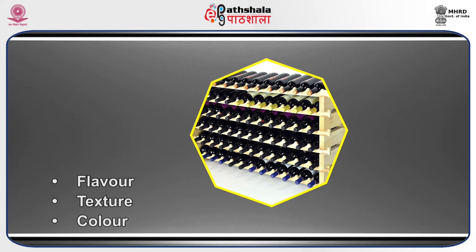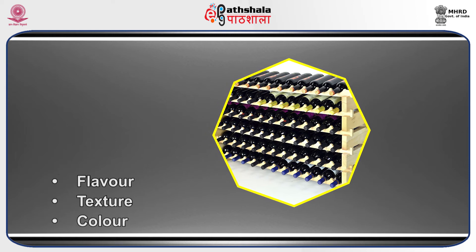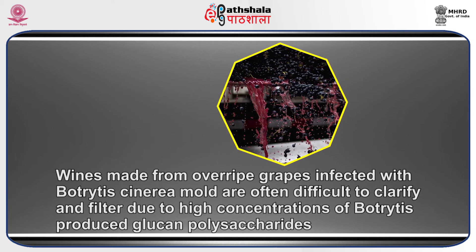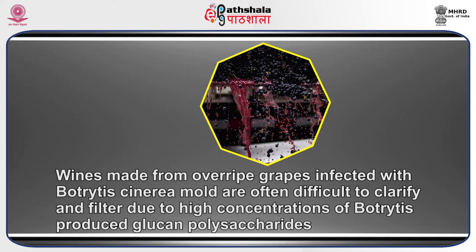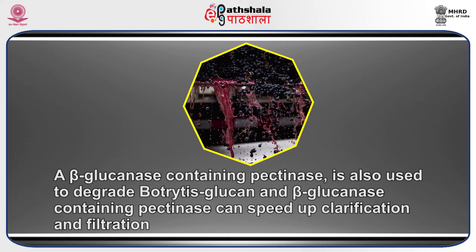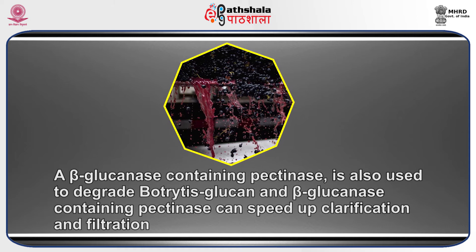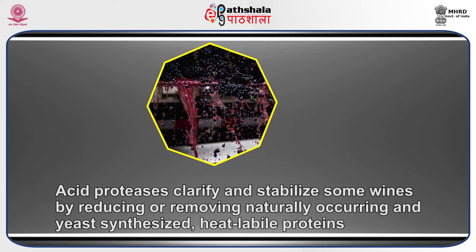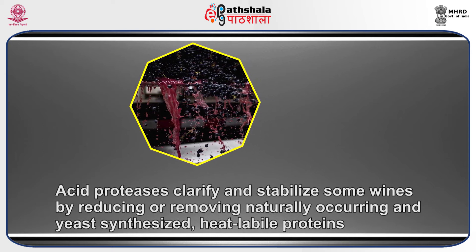Beta-glucanase-containing pectinase de-pectinizes grape must prior to fining and filtration during fermentation or in young wines. Wines made from overripe grapes infected with Botrytis cinerea mold are often difficult to clarify and filter due to high concentrations of this mold-produced glucan polysaccharides. A beta-glucanase-containing pectinase is used to degrade Botrytis glucan, and it can speed up clarification and filtration. Acid proteases clarify and stabilize some wines by reducing and removing naturally occurring heat-labile proteins.